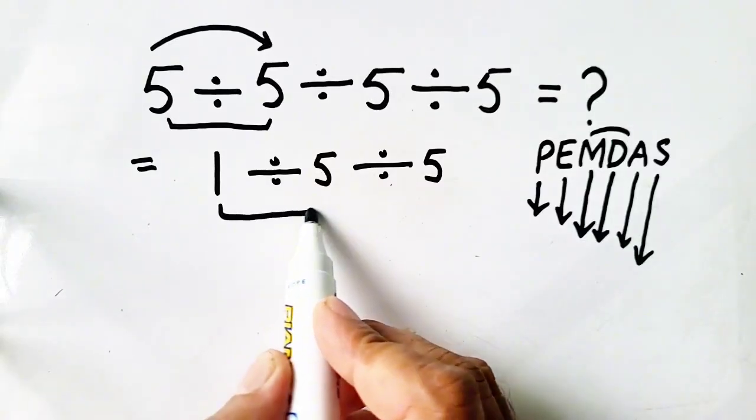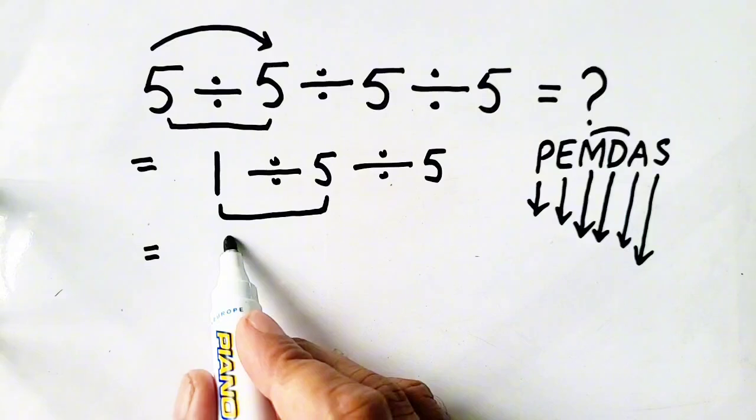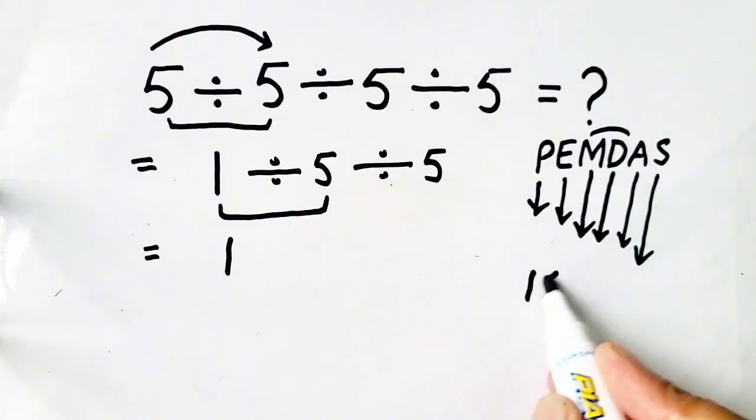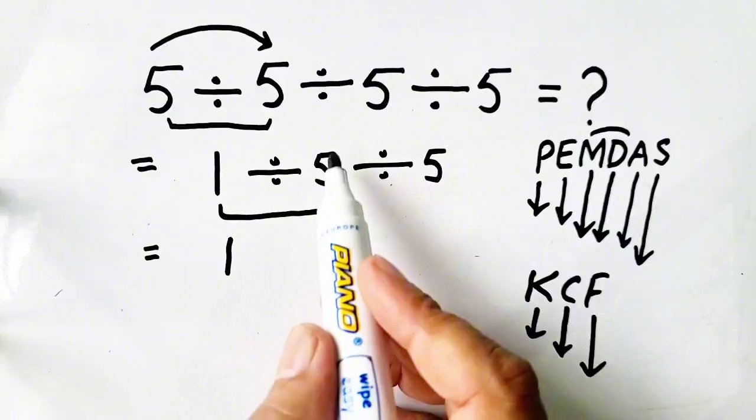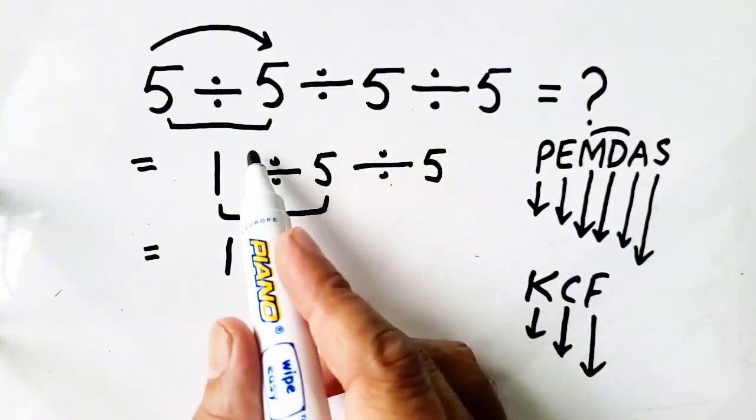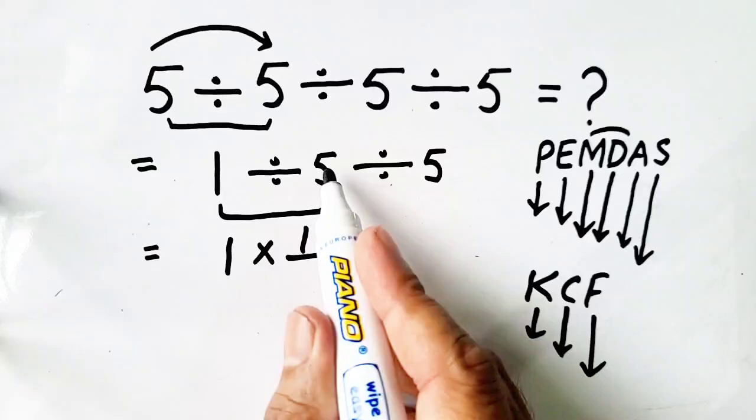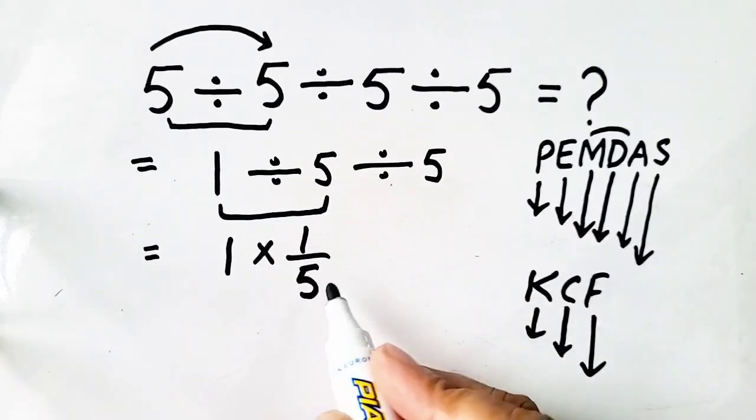So, now we will solve 1 divided by 5. So, it will be 1. Now, apply K-C-F rule. Keep, change, flip rule. So, we flip it after converting division into multiplication. It's reciprocal. Flip it. So, it will be 1 over 5.